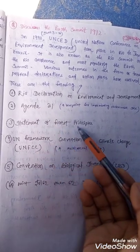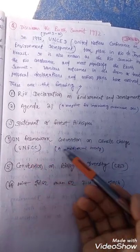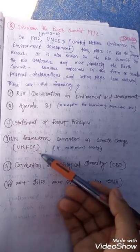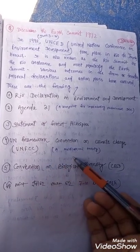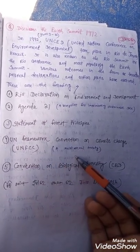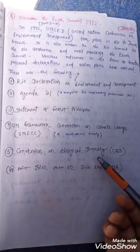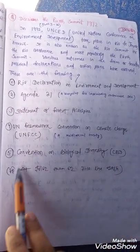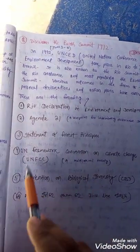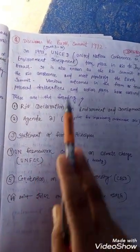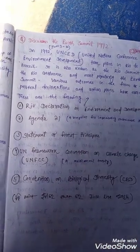Other key outcomes included the UN Framework Convention on Climate Change (UNFCCC), which is a multilateral treaty, and the Convention on Biological Diversity (CBD). You need to write at least 10 to 15 lines on each of these points in the exam to complete a 20-mark answer.